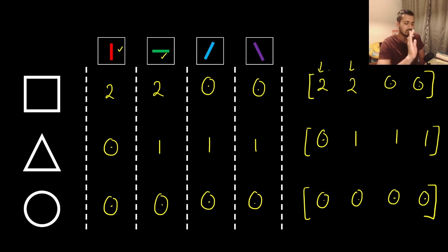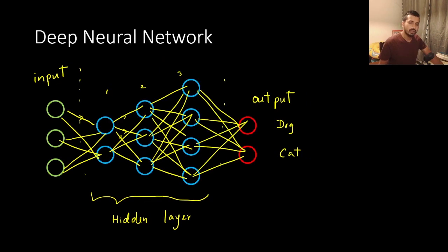A very simple example — you can train it. In this video, we have a neural network. So we have the input, the hidden layers, and the output. We have the nodes in this realm. We have a neural network in machine learning.